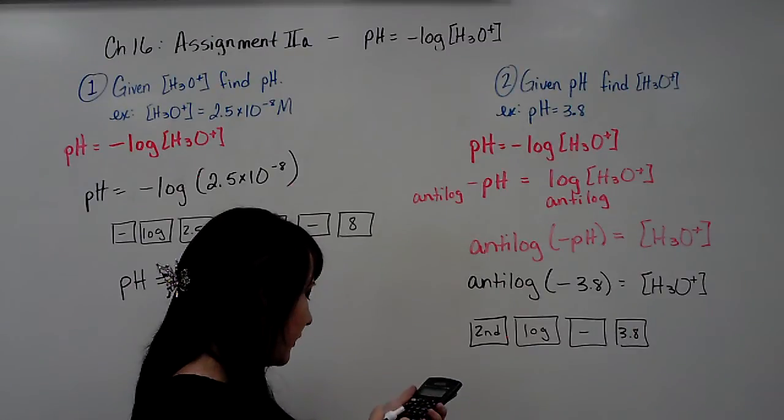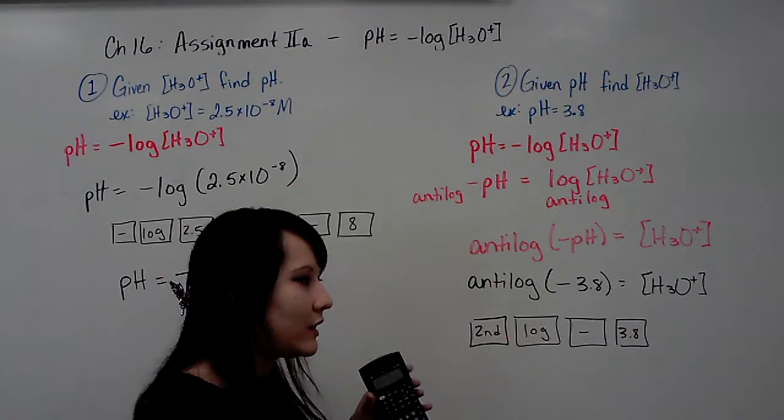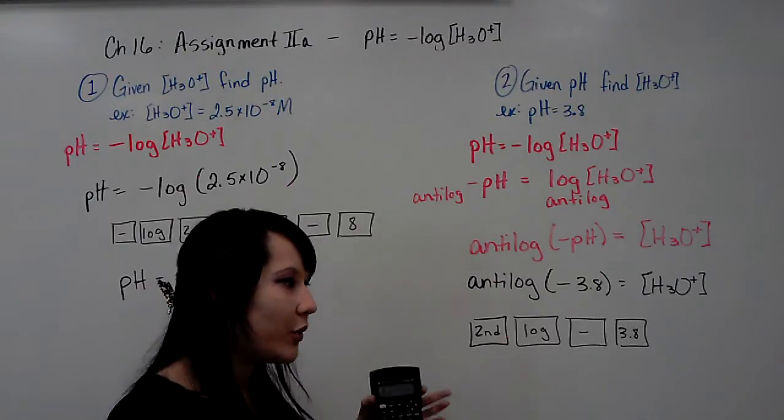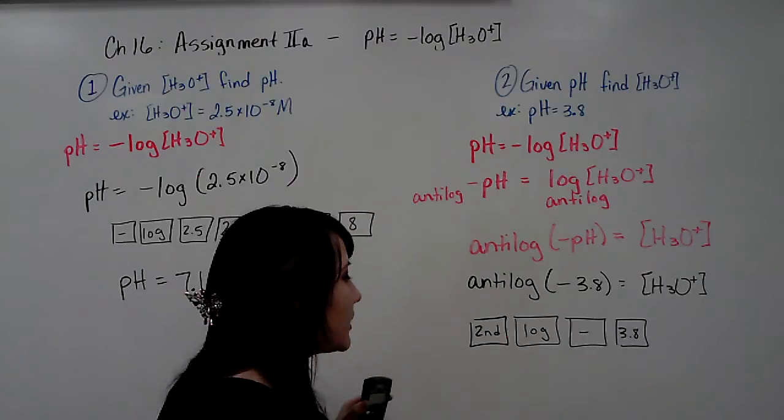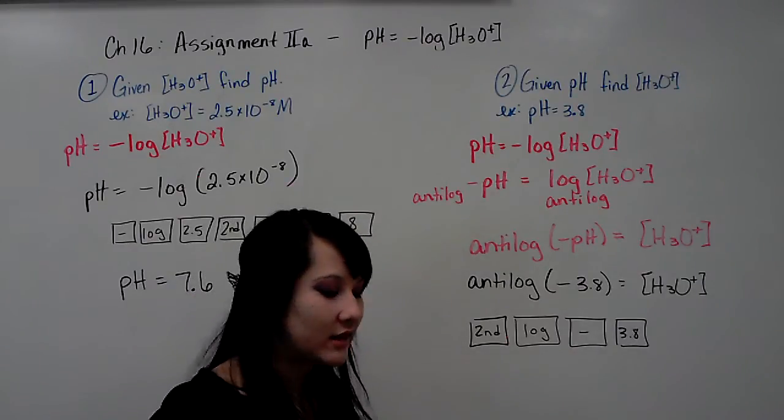Second log, negative 3.8, equals. And you're going to get a long decimal 0.0000158 and such numbers. And I recommend you change it to scientific notation.